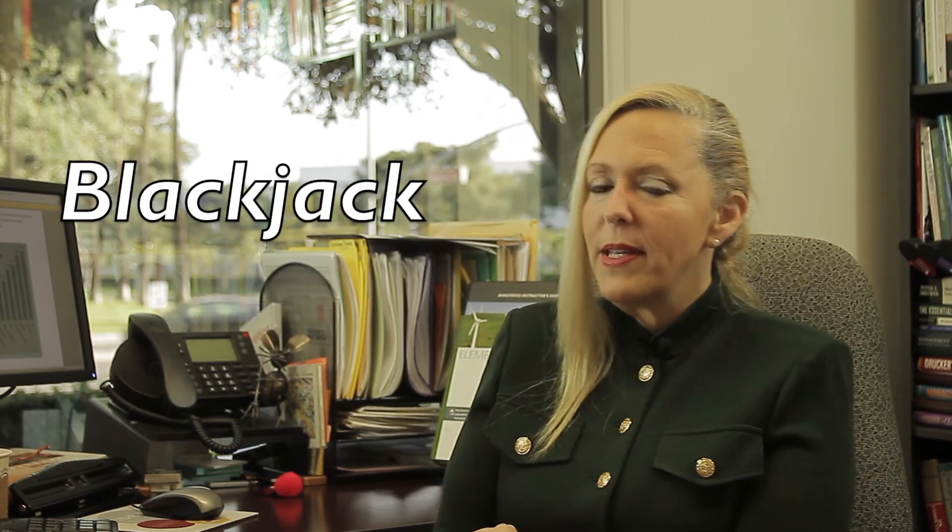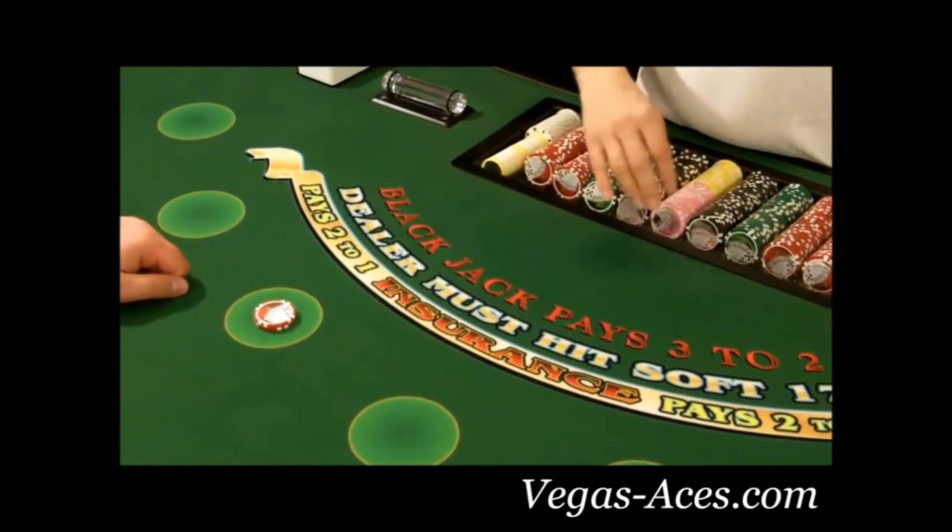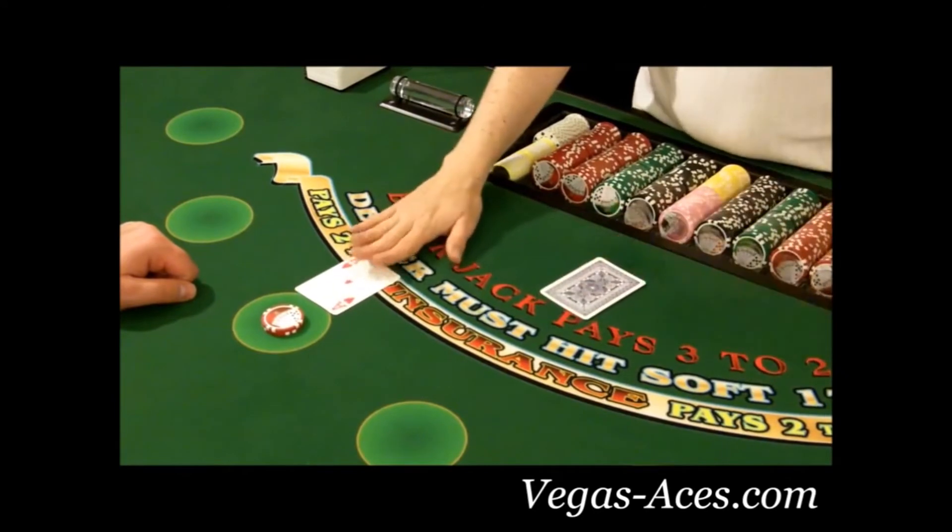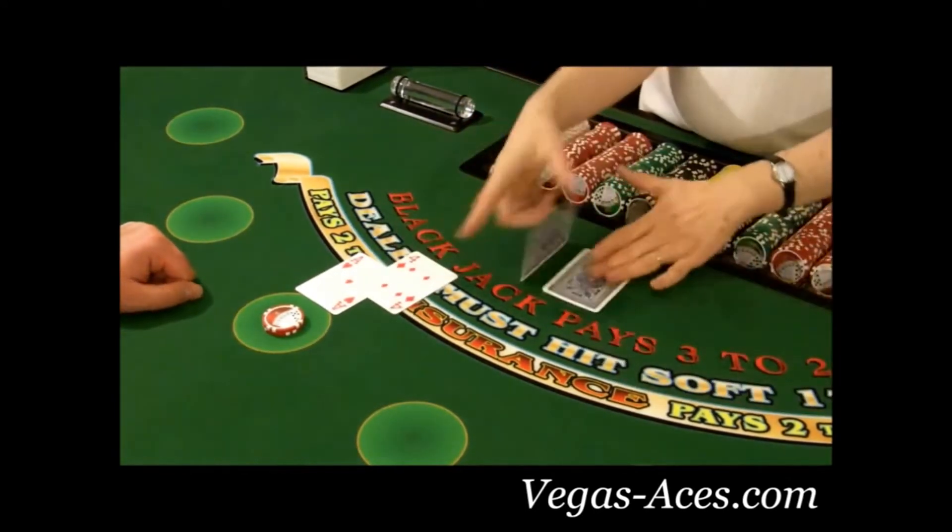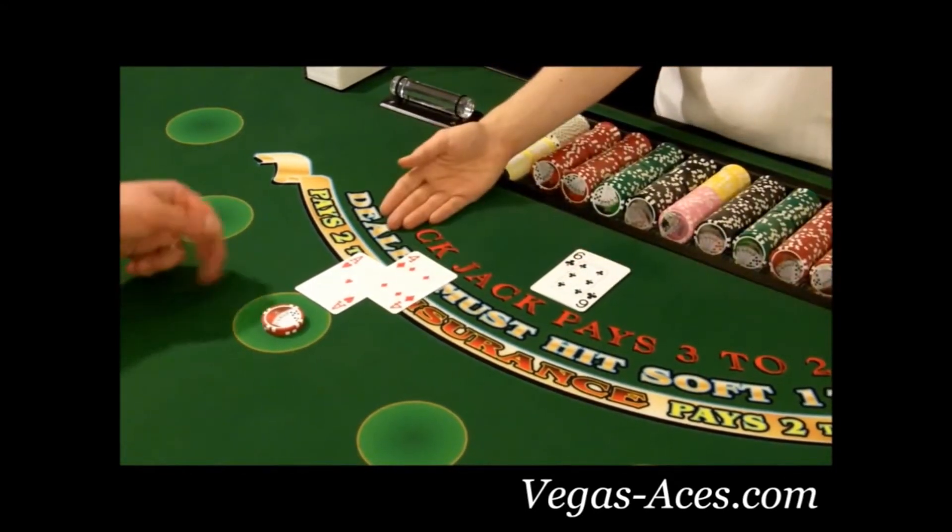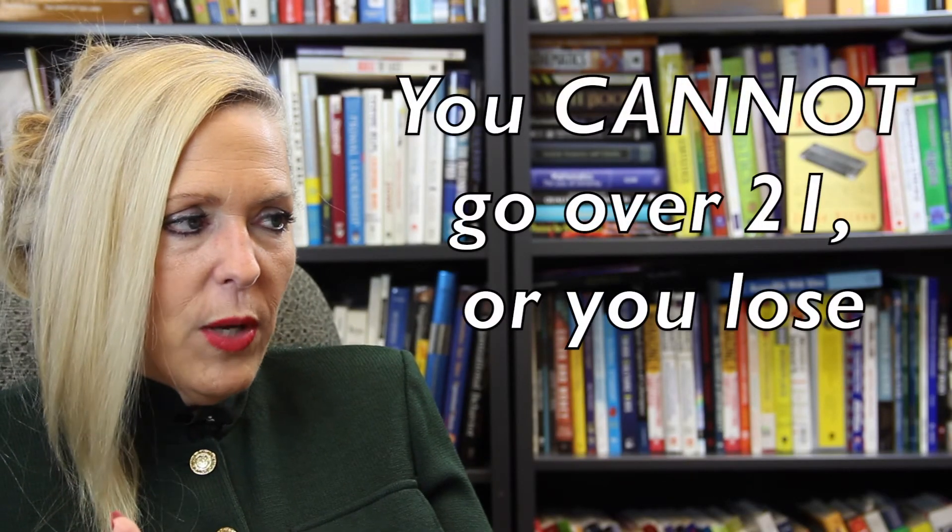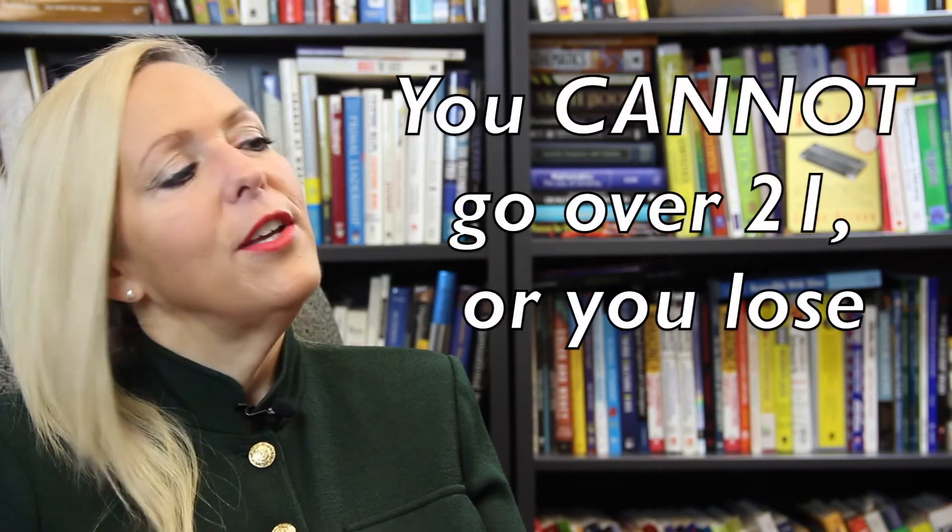Before you play a game of blackjack, you should probably know one more key piece of information. Blackjack is sometimes called 21 because you want to get as close to 21 as you can. But whatever you get, you want it to be higher than the dealer. But you cannot go over 21. If you go over 21, you lose. So you really need to know your probabilities.